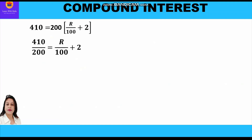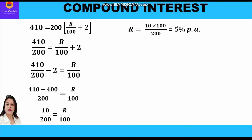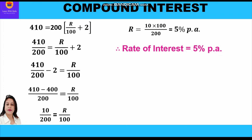Cross multiplying: 410/200 = R/100 + 2. Taking 2 to the other side: 410/200 − 2 = R/100. Taking LCM: (410 − 400)/200 = R/100, so 10/200 = R/100. Cross multiplying: R = (10 × 100)/200 = 5. So the rate of interest is 5% per annum.